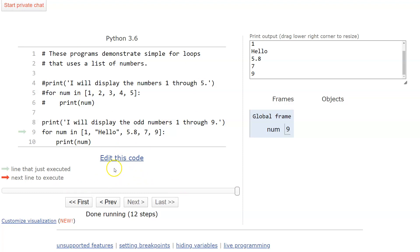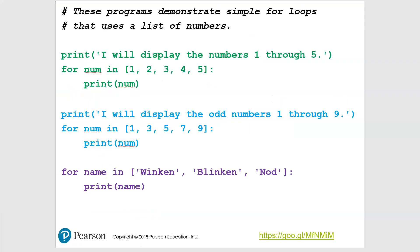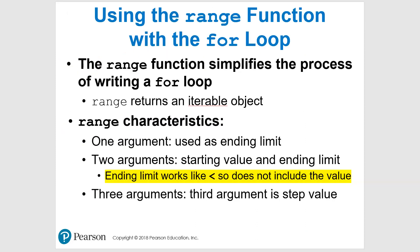So we've seen basic for loops using a list. Let's take a look at range, because this is a really nice feature we can use. In the range function, you have different types of things you can do — you can use one argument, two, or three. An important note: any limit works like less than, so it does not include the actual ending value itself.